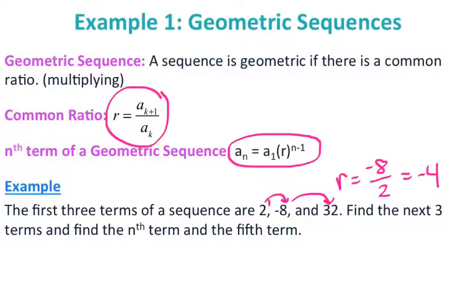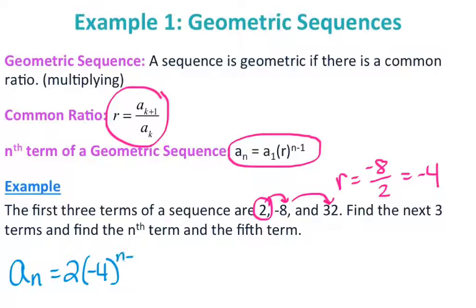So I have my r and my first term, so I can go ahead and find the nth term of this sequence and write the formula. I have a_n equals my first term, which is 2, times the common ratio negative 4 to the n minus 1. That's how you find the nth term.